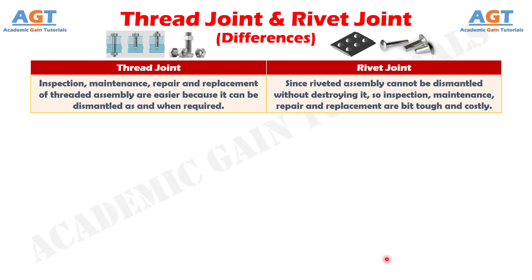Number six: inspection, maintenance, repair, and replacement of threaded assembly are easier because it can be dismantled as and when required, whereas since riveted assembly cannot be dismantled without destroying it, inspection, maintenance, repair, and replacement are a bit tough and costly.